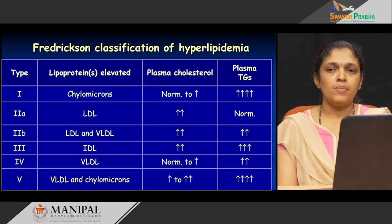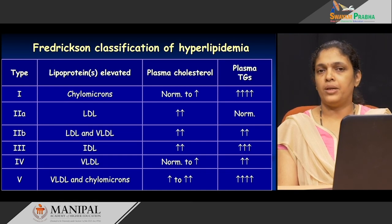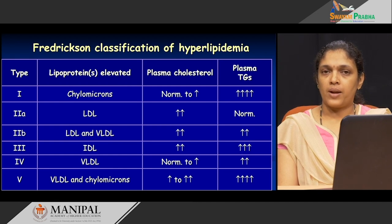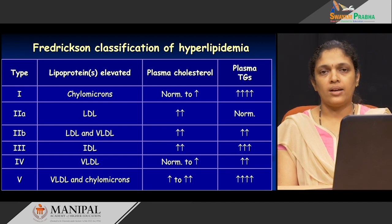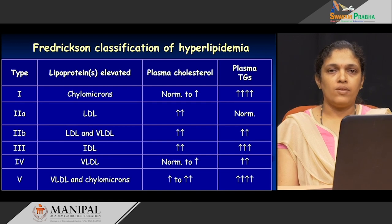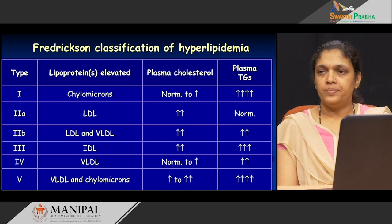These are conditions belonging to the category of primary hyperlipidemias. As mentioned, there are two types: primary and secondary. This Fredrickson classification tells us about the primary reasons — the genetic defects — which indirectly lead to an increase in the levels of cholesterol or triacylglycerols.